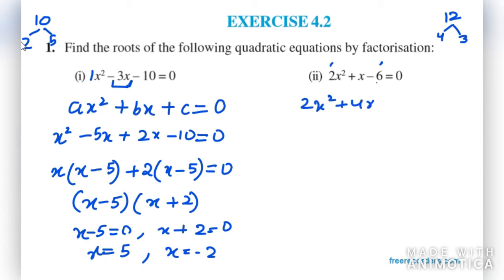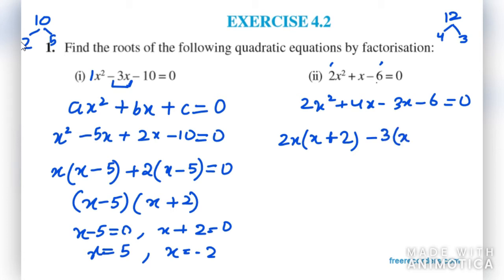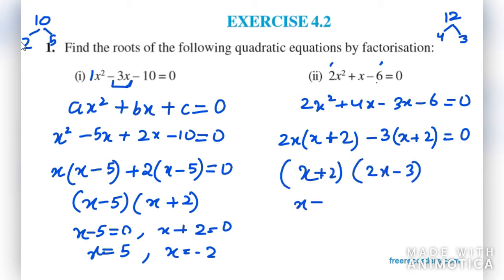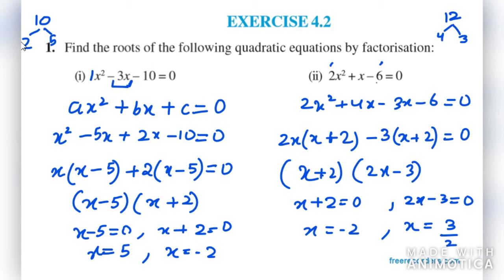So we write 2x² + 4x - 3x - 6 = 0. From the first two terms, take 2x common: 2x(x + 2). From the last two terms, take -3 common: -3(x + 2). This gives factors (x + 2) and (2x - 3). Equating to zero: from the first, x = -2; from the second, x = 3/2. These are the two roots.